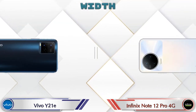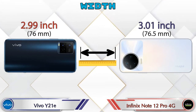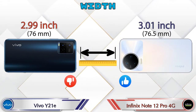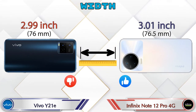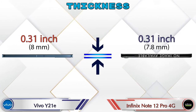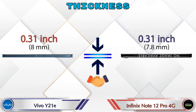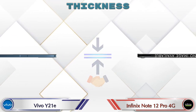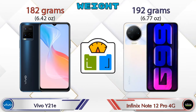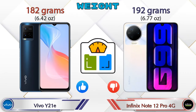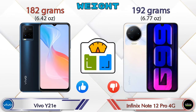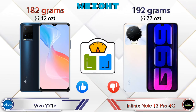The width of the Y21E is 2.99 inches and the Note 12 Pro 4G is 3.01 inches. Both phones share the same thickness of 0.31 inches. For weight, the Y21E is 182 grams and the Note 12 Pro 4G is 192 grams, making the Note 12 Pro 4G heavier than the Y21E.